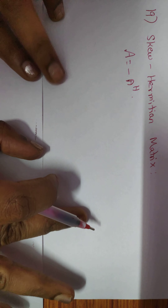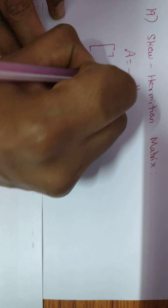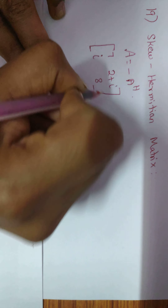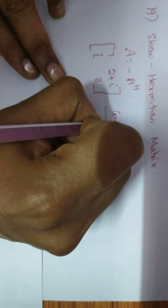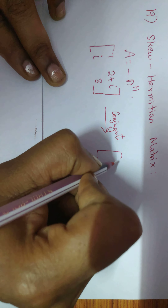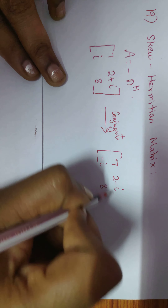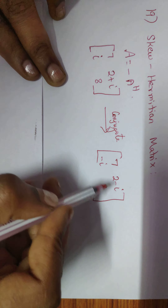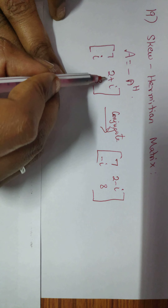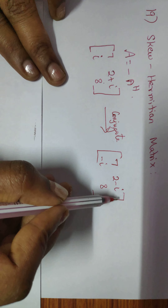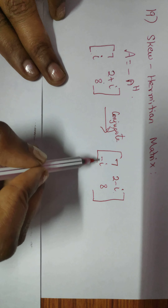For the Hermitian matrix operation, suppose the given matrix has values 7, 2+i, i, and 8. First, we perform the conjugate operation: the conjugate of the matrix is 7, 2-i, -i, and 8. The imaginary parts are converted to the opposite sign — plus becomes minus.